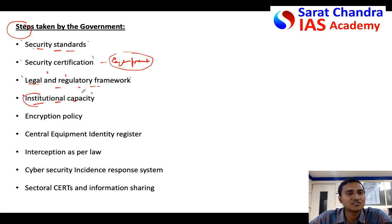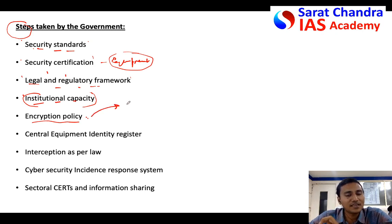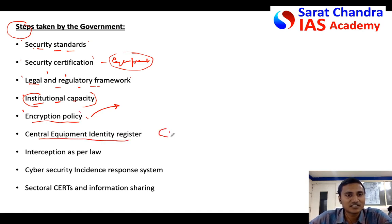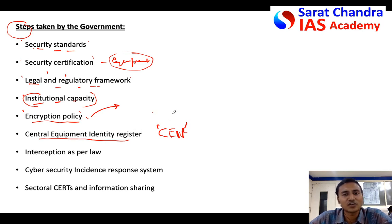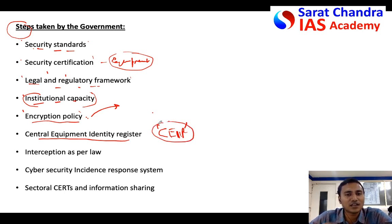The government is building institutional capacity by creating new organizations like CERTs and cyber security centers, with CDAC also supporting them — developing state-of-the-art laboratory infrastructure. There is an encryption policy requiring that any sensitive or critical data passing through communication networks must be encrypted, so even if stolen, it cannot be deciphered. The Central Equipment Identity Register (CEIR), started about a year back, connects all mobile phones in India to a central database, enabling immediate blocking of cloned, duplicated, or stolen phones.